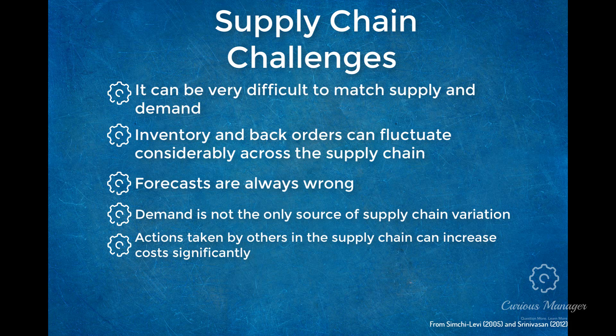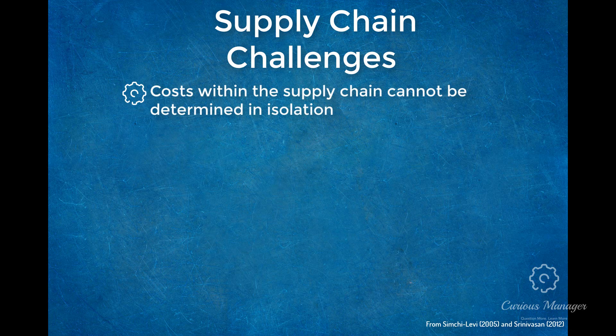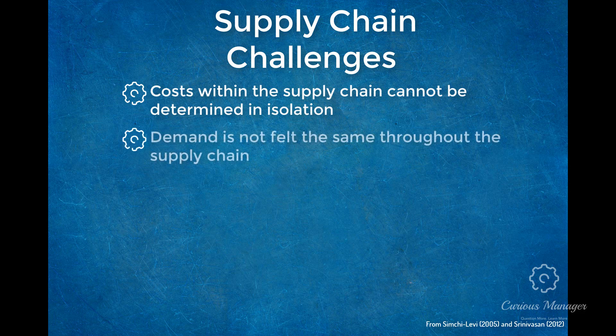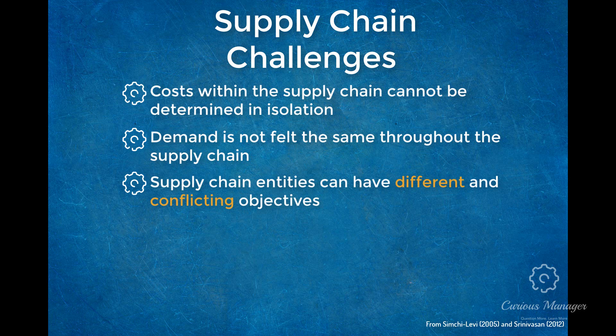The same is true for strategies such as outsourcing or offshoring, in which the supply chain is stretched to reduce costs in one area with the risk of failure elsewhere. Number six: costs within the supply chain cannot always be determined in isolation; the more complex the supply chain, the more potential for externalities where costs are disproportionately felt by others without their knowledge. Number seven: demand is not felt the same throughout the supply chain — it is felt most by the retailer, and this is a common cause of the bullwhip effect. Number eight: supply chain entities sometimes have different and conflicting objectives, leading to conflict as each party tries to reduce costs and shift risks onto others.